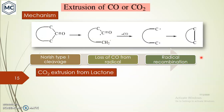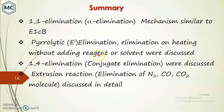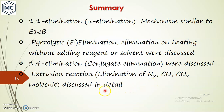Another example is carbon dioxide extrusion from a lactone. This lactone undergoes extrusion, a new bond forms, and the compound undergoes tautomerism to give a stable product. In summary: alpha (1,1) elimination with mechanism similar to E1cb; pyrolytic (EI) elimination on heating without reagent or solvent; 1,4 conjugate elimination; and extrusion reactions involving loss of nitrogen, carbon monoxide, and carbon dioxide — all were discussed today. Thank you for watching.